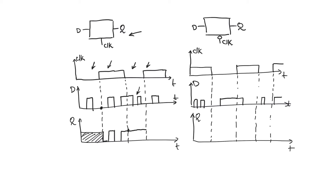As soon as we enter the active phase of the clock again — the one phase of the clock — Q will again start to follow D. So it will go down to zero immediately and then it will copy D as it goes up and down again.